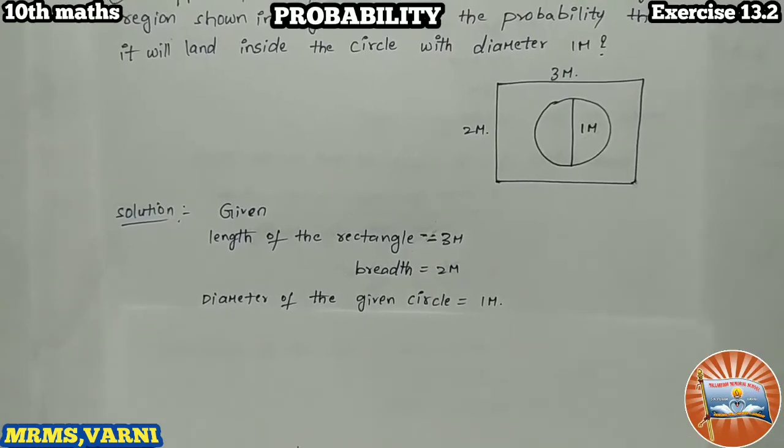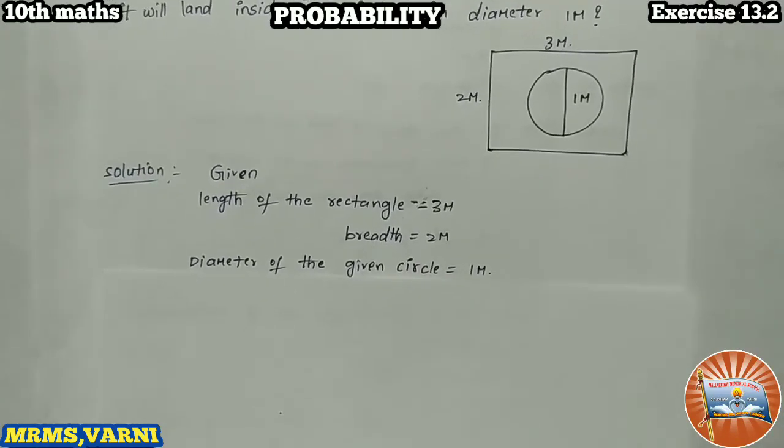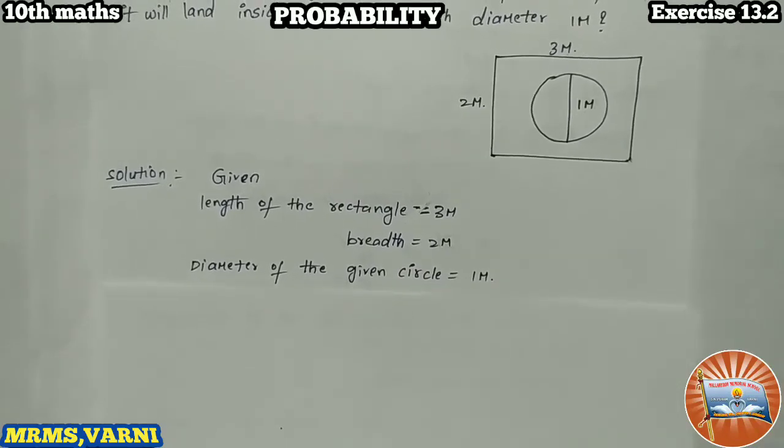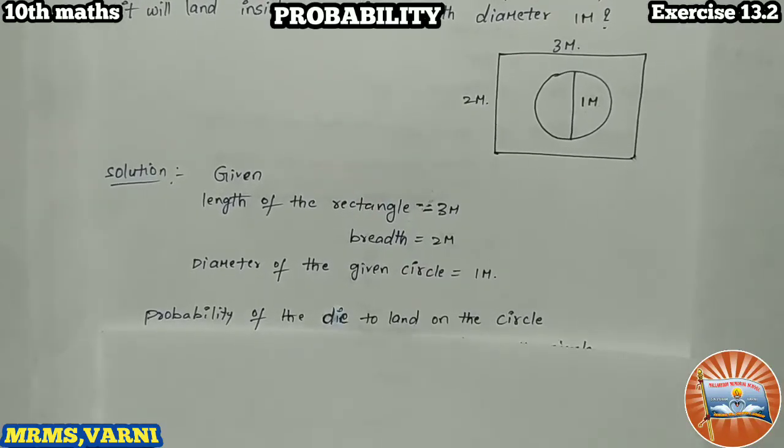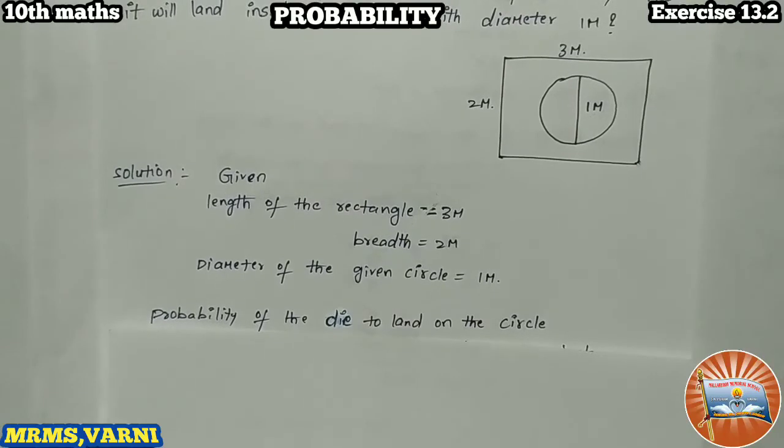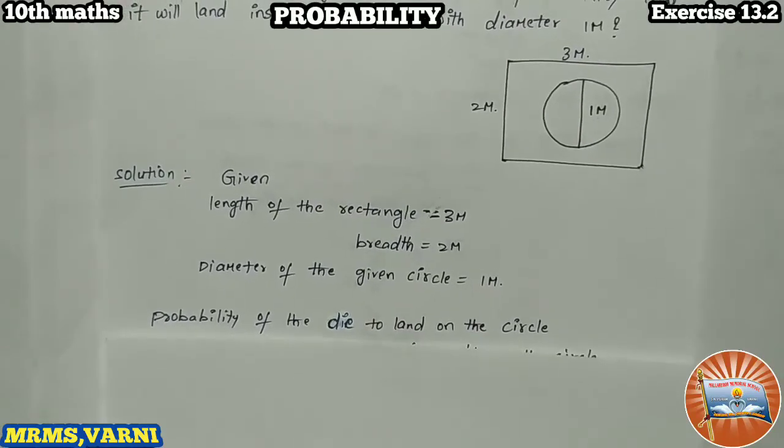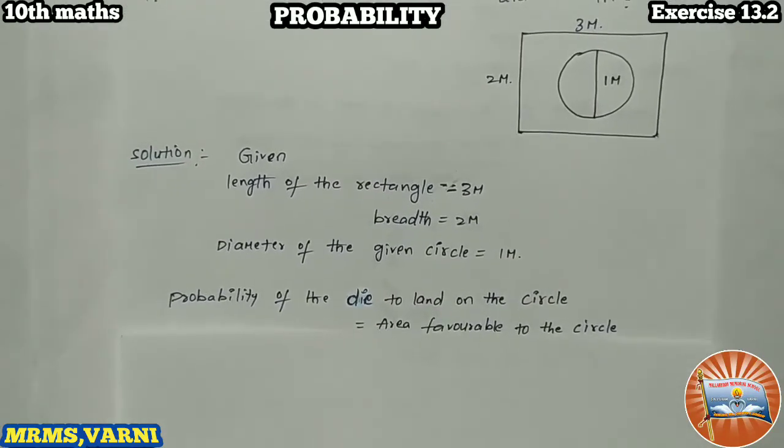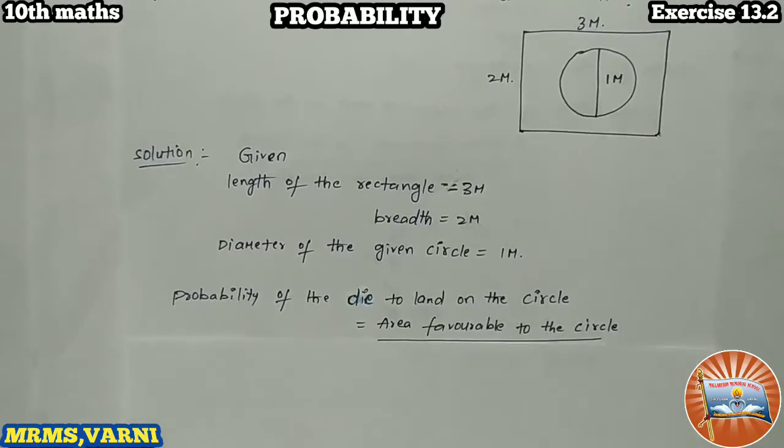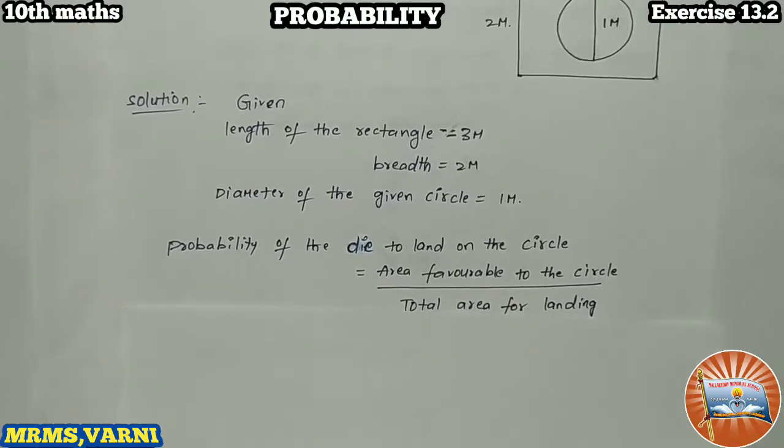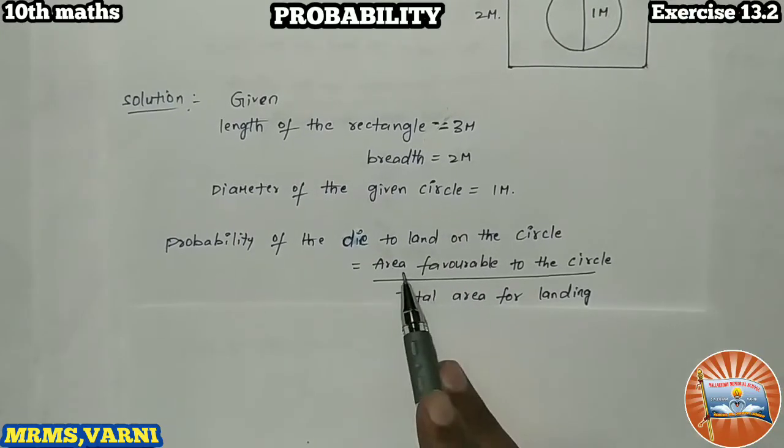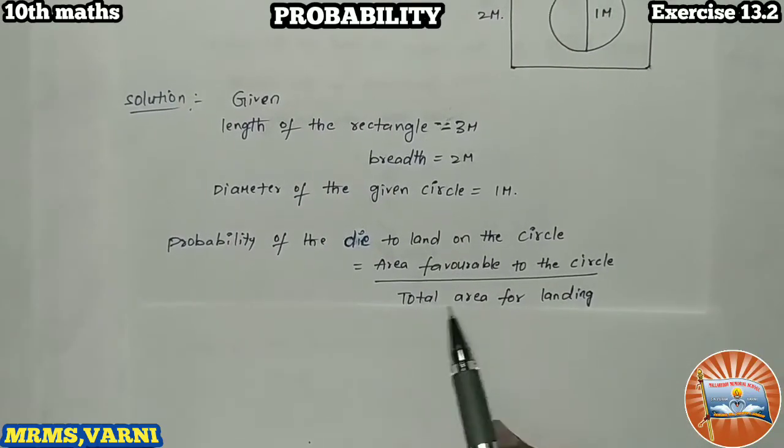Let us write the formula. This is quite different from previous problems. Probability of the die to land on the circle equals area favorable to the circle divided by total area for landing.